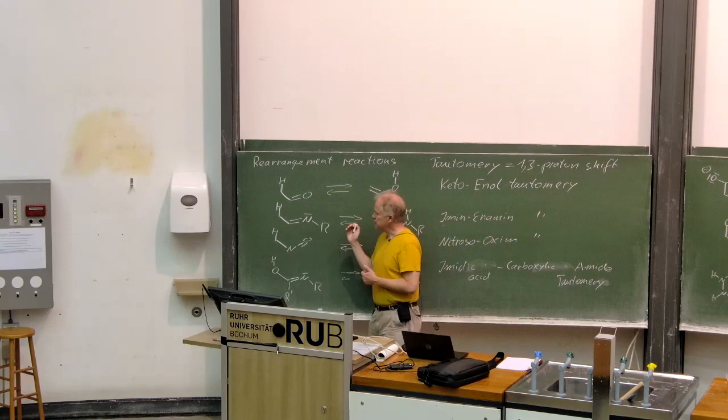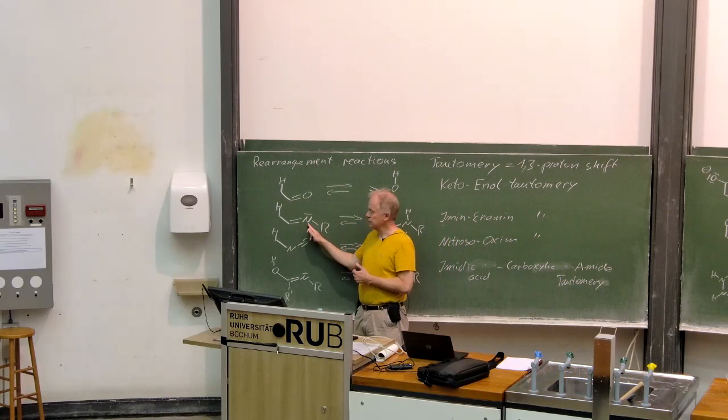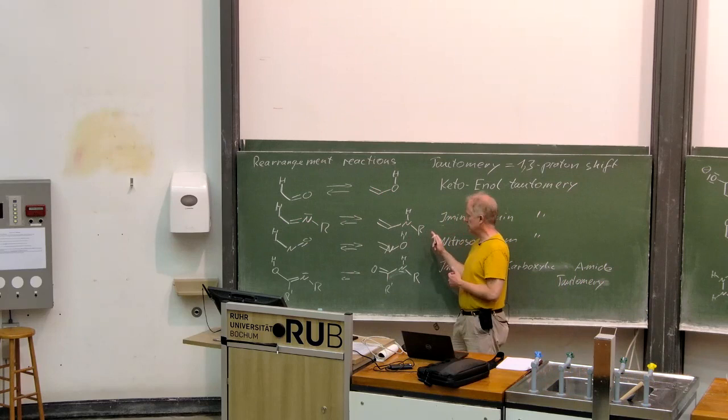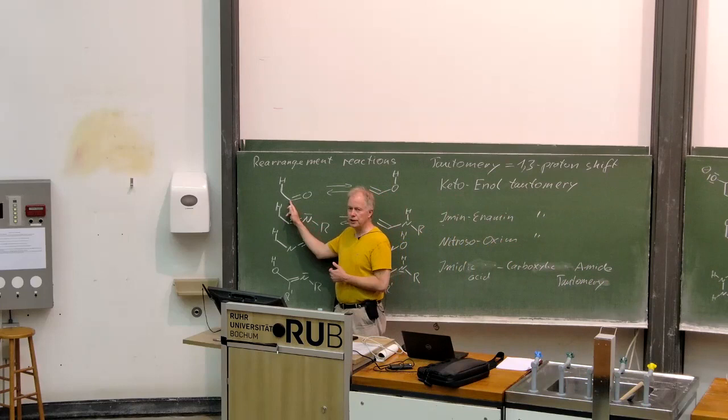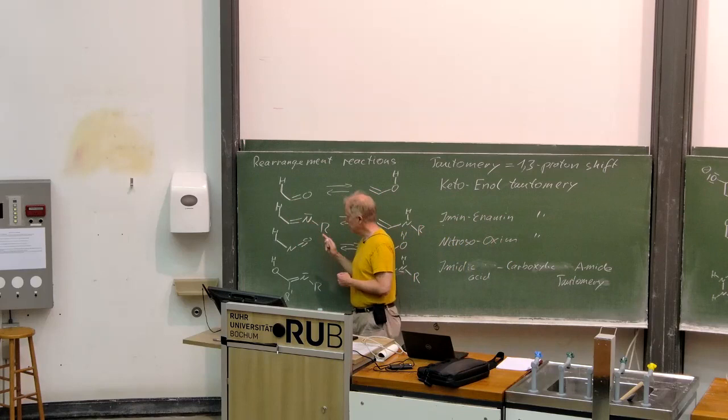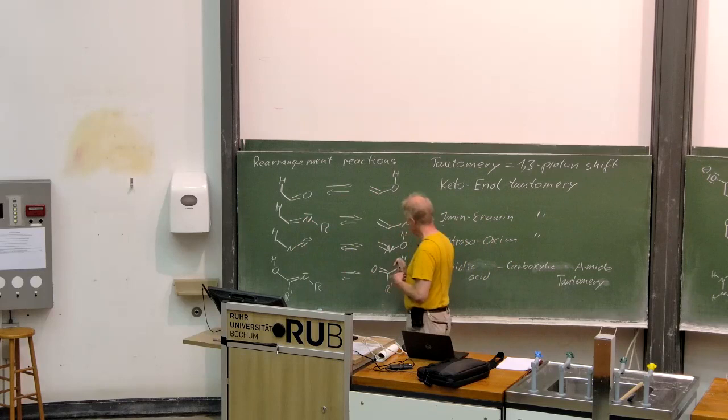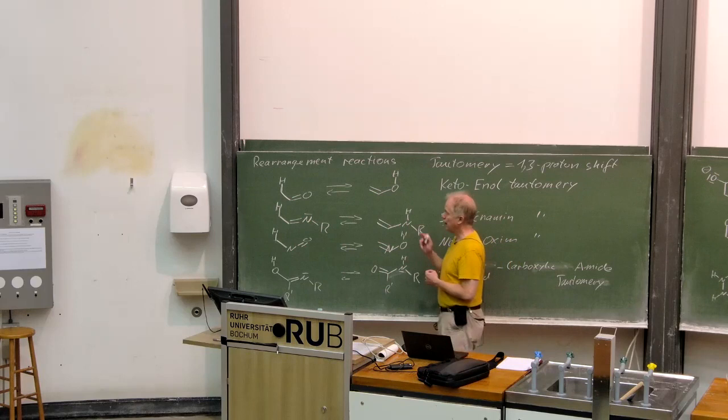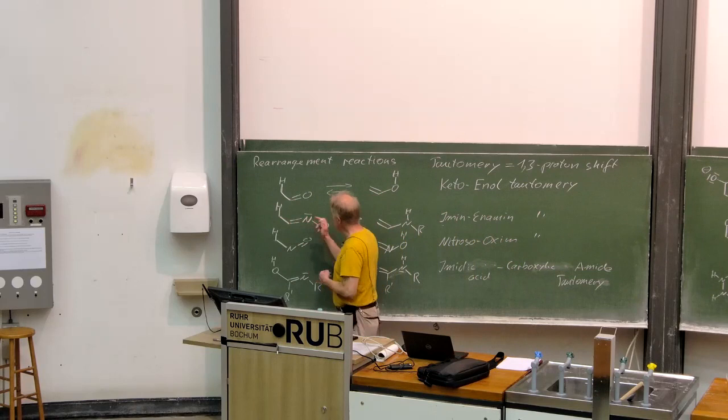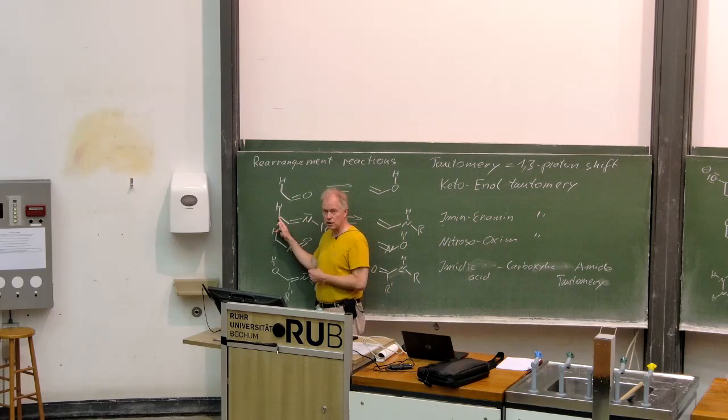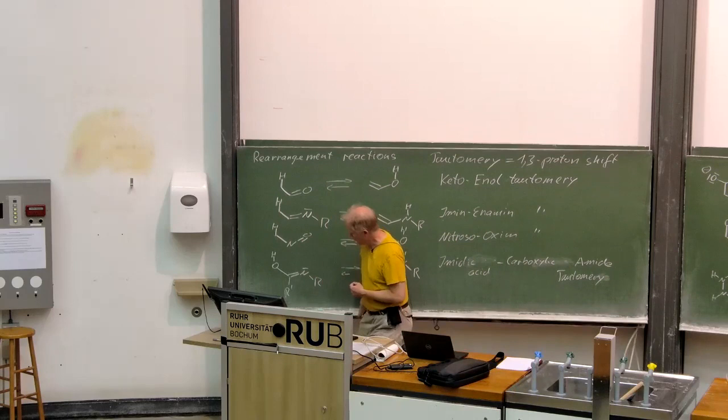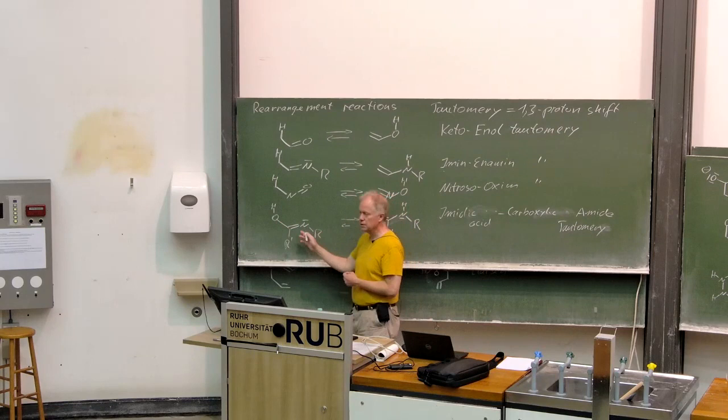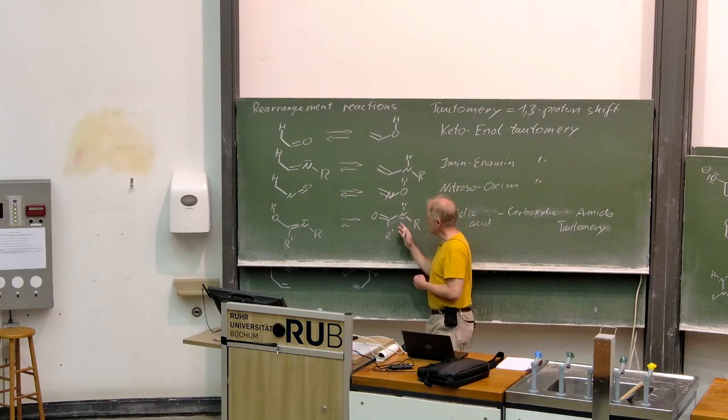If we exchange the oxygen against a nitrogen, then we have an imine tautomerie. If instead we exchange this carbon here against the nitrogen, then we get to a nitroso-oxime tautomerie. And if we exchange within the imine-enamine tautomerie, this carbon against an oxygen and add some substituent here, then as you see we have this example of an imidic acid, carboxylic acid amide tautomerie.